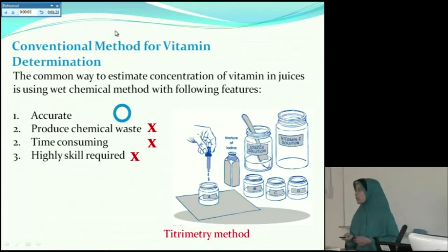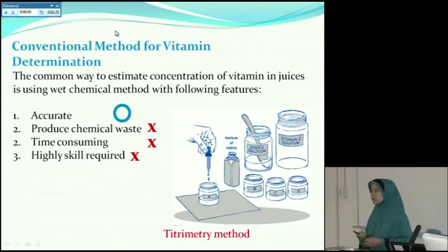Many conventional methods have been conducted to determine the concentration of vitamin C, but the conventional method has some limitations. For example, titrimetry method is time wasting and produces chemical waste, for example iodine and starch, and needs high skill.